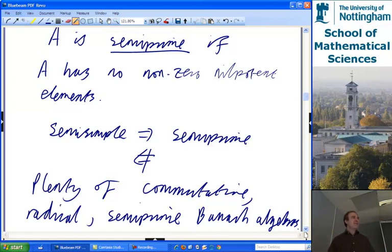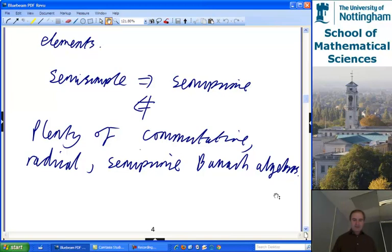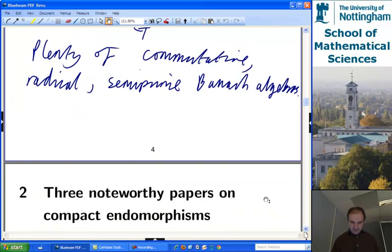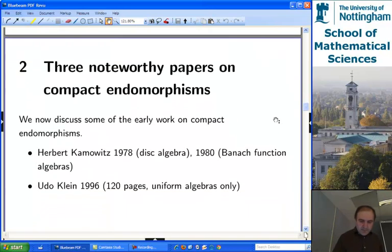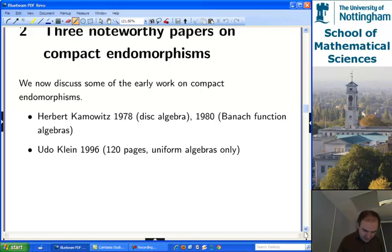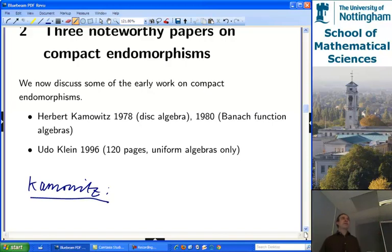And, so, plenty of examples around which are very different from semi-simple. I should say, this one, you may want to unitize them if you want to get into the unital setting. But, certainly they can be very far from semi-simple. So, let me say something about some papers on compact endomorphisms, because I want to say stuff that happened a long time before I came into the picture. So, we go back to 1978, and then 1980, when Herb Kamowitz did some of the several work on compact endomorphisms.